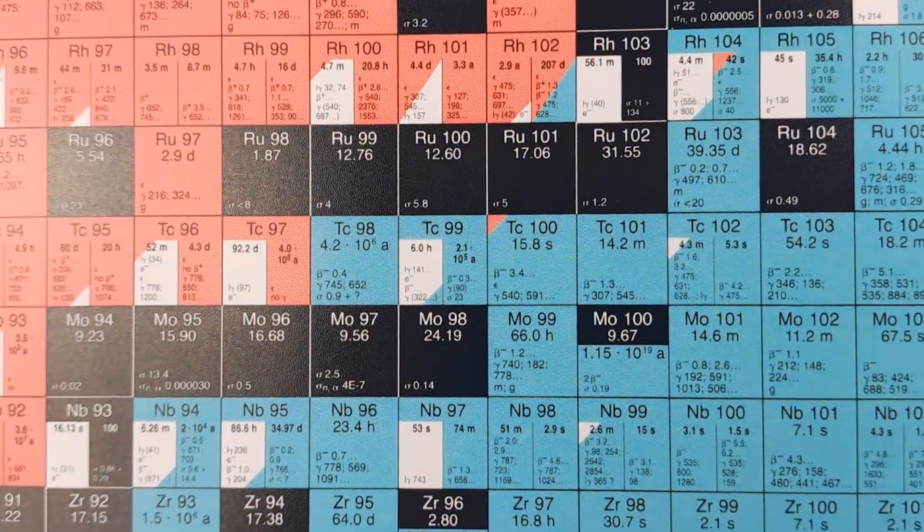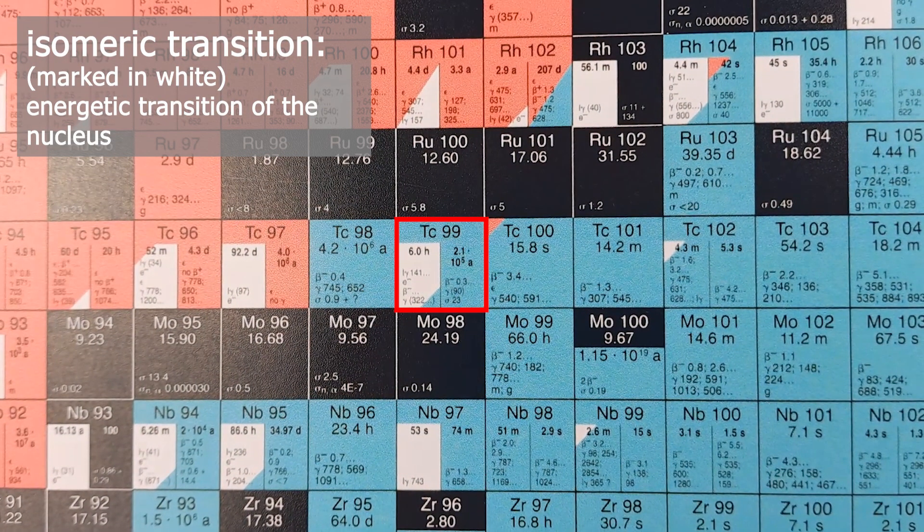Isomeric transitions. When a nucleus undergoes alpha or beta decay, the daughter nucleus remains in an excited state. When this excess energy is emitted as gamma radiation, the energy level of the nucleus changes, not the element itself. This is called an isomeric transition, briefly written as IT. Take the famous technetium-99m for instance.